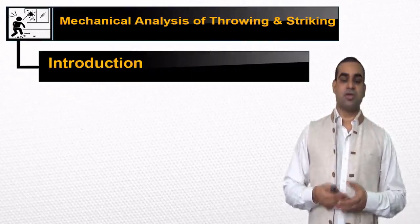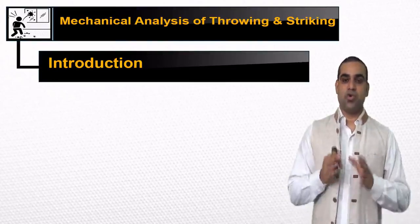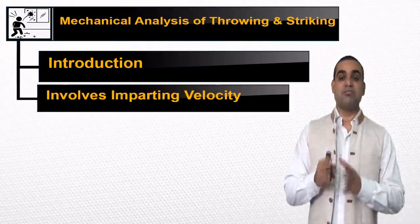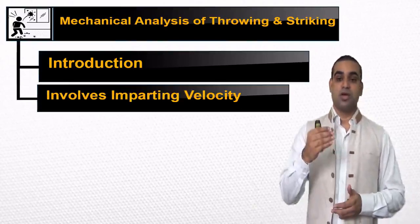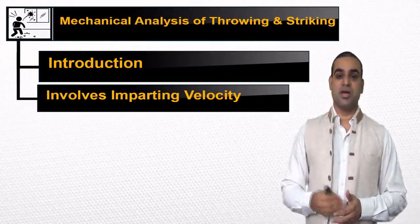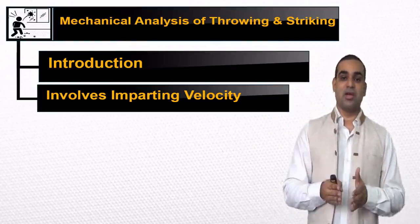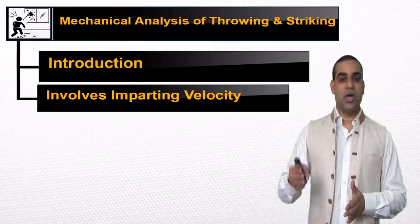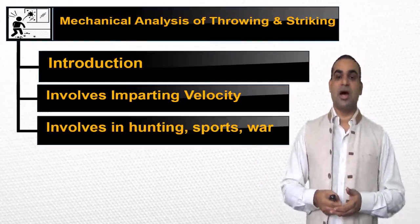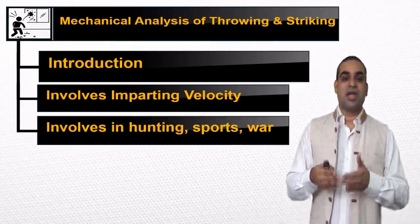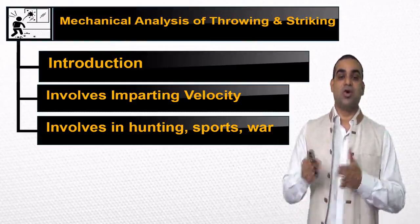We will start with the introduction of throwing and striking — fekna aur prahaar karna. Throwing and striking involves imparting velocity. Jab hum kisi vastu par force apply karte hain to vastu jo object hai, it flies in the air. This throwing and striking, we humans have used for our needs. It involves in the casual pursuit of hunting for food, sports, and war.